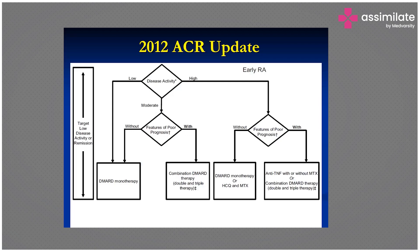According to the recent ACR update, treatment selection is based on disease activity and features of poor prognosis. In early RA with poor prognosis, options include anti-TNF agents with or without methotrexate or combination DMARD therapy. For moderate disease activity with poor prognosis, combination DMARD therapy is recommended. Without poor prognosis, DMARD monotherapy or hydroxychloroquine is appropriate.